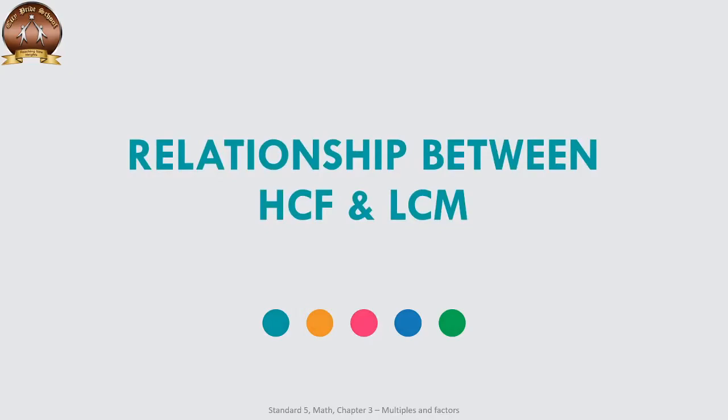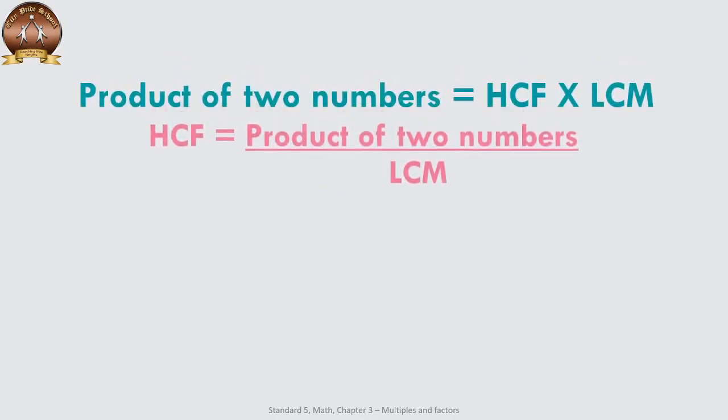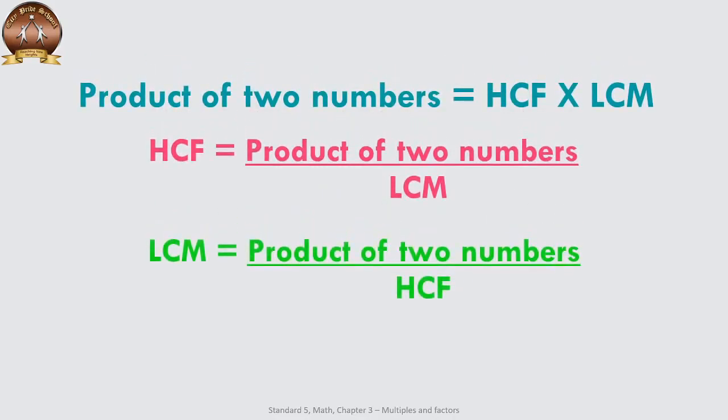Today the topic of our discussion is the relationship between HCF and LCM. HCF is the Highest Common Factor and LCM is the Least Common Multiple. The factors and the multiples are somehow related. The product of two numbers can always be expressed as HCF multiplied by the LCM of those two numbers.